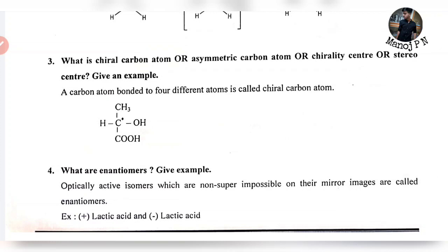What is the chiral carbon atom? This is a CET-related question — a one-mark question. This is a direct question. If you can find out the chiral carbon atom, let's find out the chiral carbon atom. Asymmetric carbon atom — also called chirality center or stereo center.